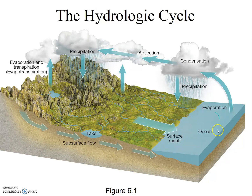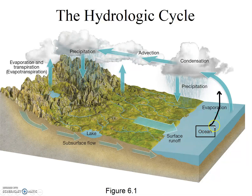In our model of the hydrologic cycle, evaporation transfers water from the ocean pool to the atmospheric moisture pool. Strangely, this diagram in your book does not include atmospheric moisture. When you draw your model, you'll want to include that pool. It might look something like this: a box around the word 'ocean' with an arrow labeled 'evaporation' leading up to another box — another pool — labeled 'atmospheric moisture.'